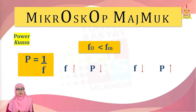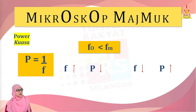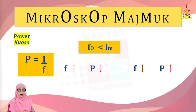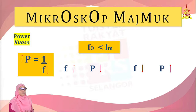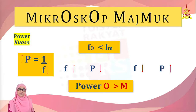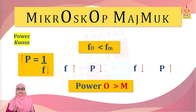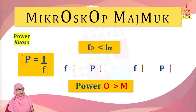Cuba tengok panjang fokus bagi kanta objek yang rendah. Panjang fokus F rendah, maka powernya adalah tinggi. Power O adalah lebih tinggi daripada power M. Maksudnya, kuasa bagi kanta objek adalah lebih tinggi daripada kuasa bagi kanta mata. Itulah ciri-ciri power bagi kanta mikroskop majmuk.